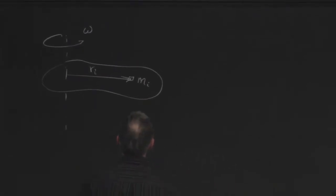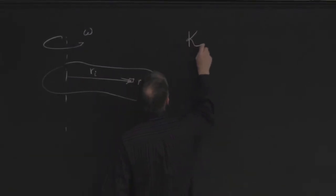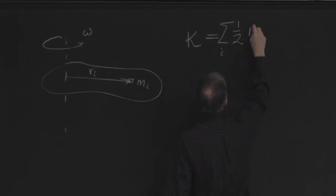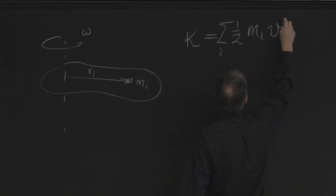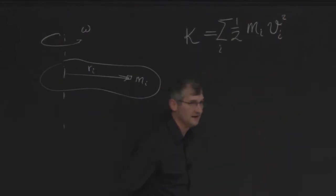You are going to do this. So figure out what the kinetic energy is by summing up 1 half m sub i v sub i squared.